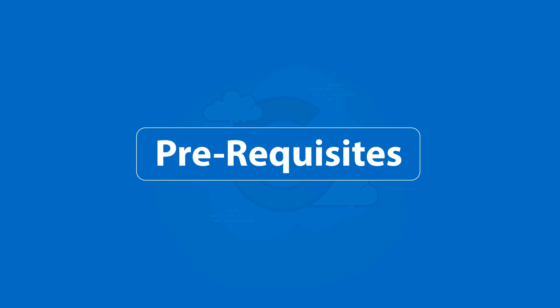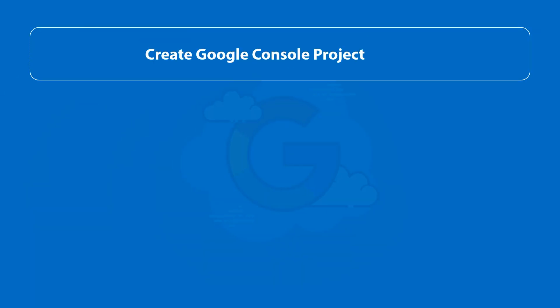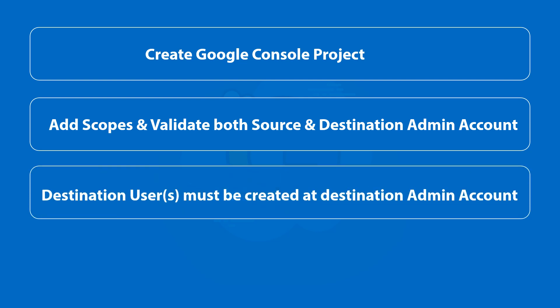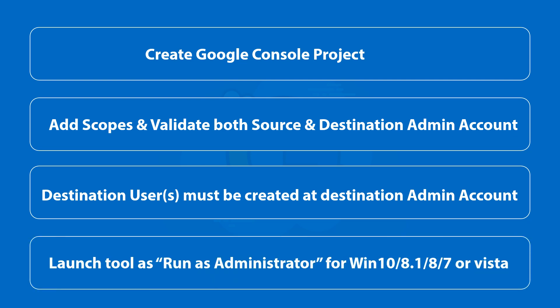Now let's check out the prerequisites before installing the software. A Google Cloud console project has to be created and API access has to be enabled. Make sure to add scopes and validate both source and destination admin accounts. Destination users should already be created at the destination admin account, and if you are using any of the Windows versions mentioned, please launch the tool as administrator.